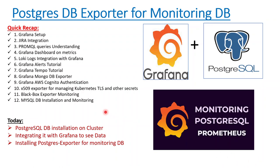Let's jump onto the agenda. We have already done 11 videos in this same playlist — starting with Grafana setup, Jira integration, Loki for logging, Tempo for tracing, AWS Cognito integration, black box testing integration, and MySQL DB installation and monitoring. Today we'll be doing PostgreSQL DB installation as the first step, then integrating it with Grafana, and finally monitoring the database with the help of the exporter provided by the Prometheus community.